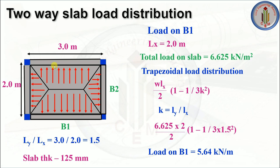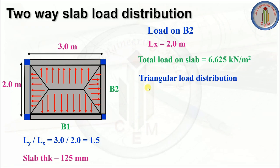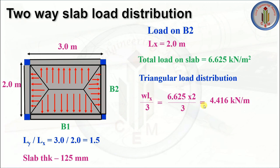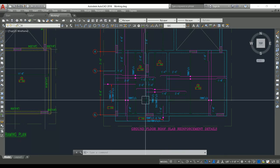Now let's calculate the load on B2 (triangular load). Lx = 2 m, total load = 6.625 kN/m². The formula for triangular load distribution is: w × Lx / 3 = 6.625 × 2 / 3 = 4.416 kN/m. So load on Beam 2 is 4.416 kN/m. Along with this, the self weight of the beam must be added. This is how you calculate the two-way slab load distribution.